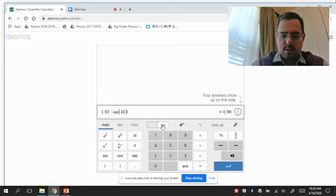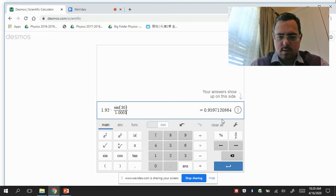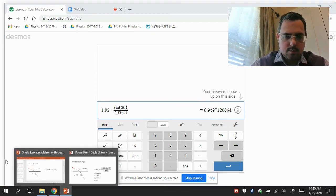It's very important at this point that this button up here says D-E-G. So make sure your button says D-E-G. If it was R-A-D or radians, you'd be getting a completely different answer. And then we divide that by 1.0003. That doesn't make a whole lot of difference. And so you get your answer here on the right side. I'm just going to round it to two decimal places, and that would be 0.96.